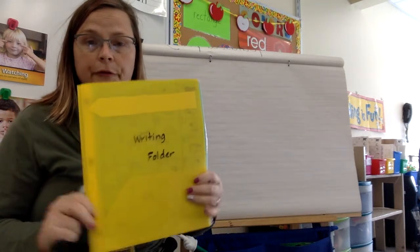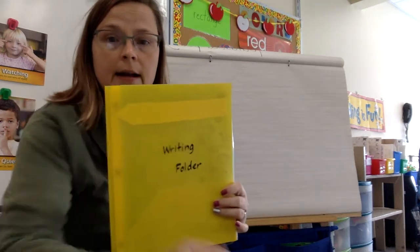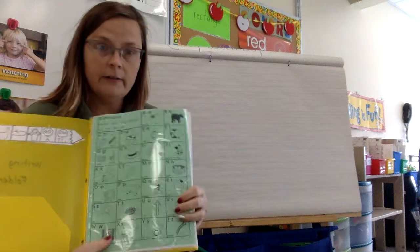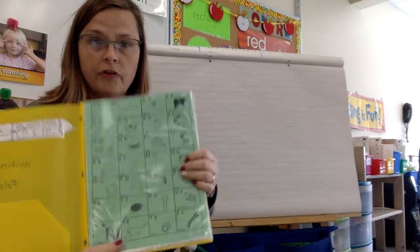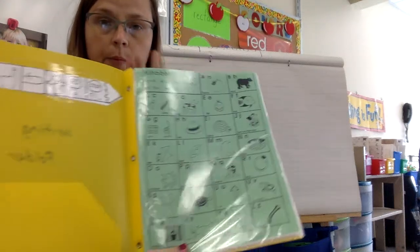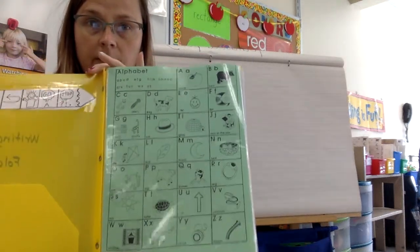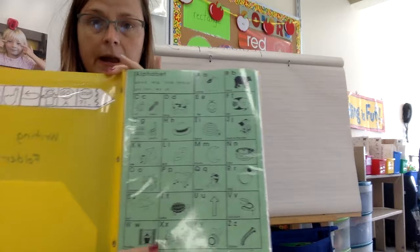We have our writing folder. And inside our writing folder, we have our Lincoln chart, which is a tool that helps us associate words that start the same way.